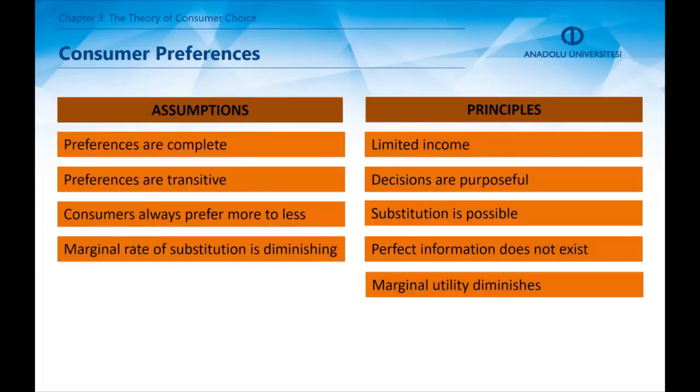Consumer theory relies on assumptions and principles. There are four assumptions and five principles. The assumptions are, first, preferences are complete, which means a consumer can compare and rank all the possible baskets that he or she can have.